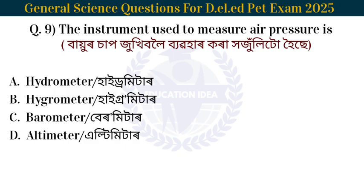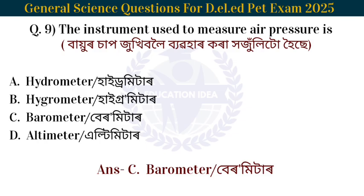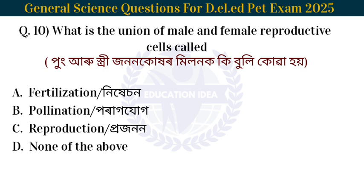Next question: The instrument used to measure air pressure is? The answer is a barometer. A barometer is used to measure air pressure.